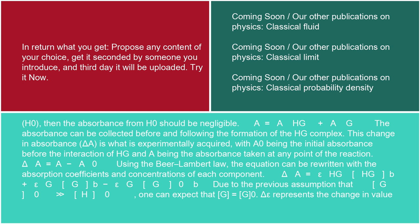The absorbance simplifies to A = A_HG + A_G. The absorbance can be collected before and following the formation of the HG complex. This change in absorbance, ΔA, is what is experimentally acquired, with A₀ being the initial absorbance before the interaction of HG and A being the absorbance taken at any point of the reaction: ΔA = A − A₀. Using the Beer-Lambert Law, the equation can be rewritten with the absorption coefficients and concentrations of each component.